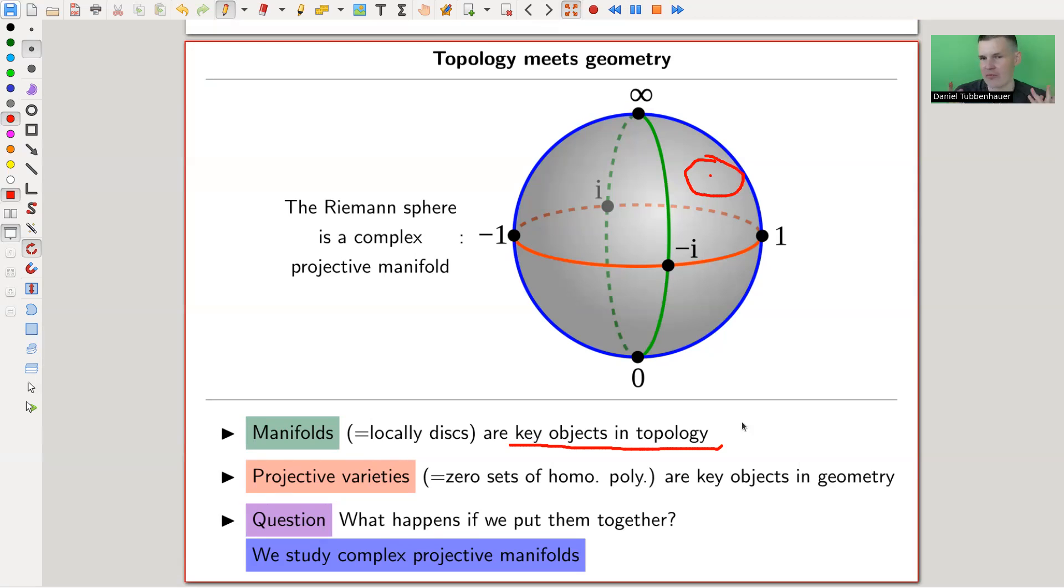What geometry, so algebraic geometry in particular, likes to study are varieties. And maybe the set of varieties is a bit too wild. So let's say we are studying manifolds in topology. Let's say we study projective varieties. And these are kind of zero sets of polynomials. So here, a zero set of a polynomial would be a circle, for example.